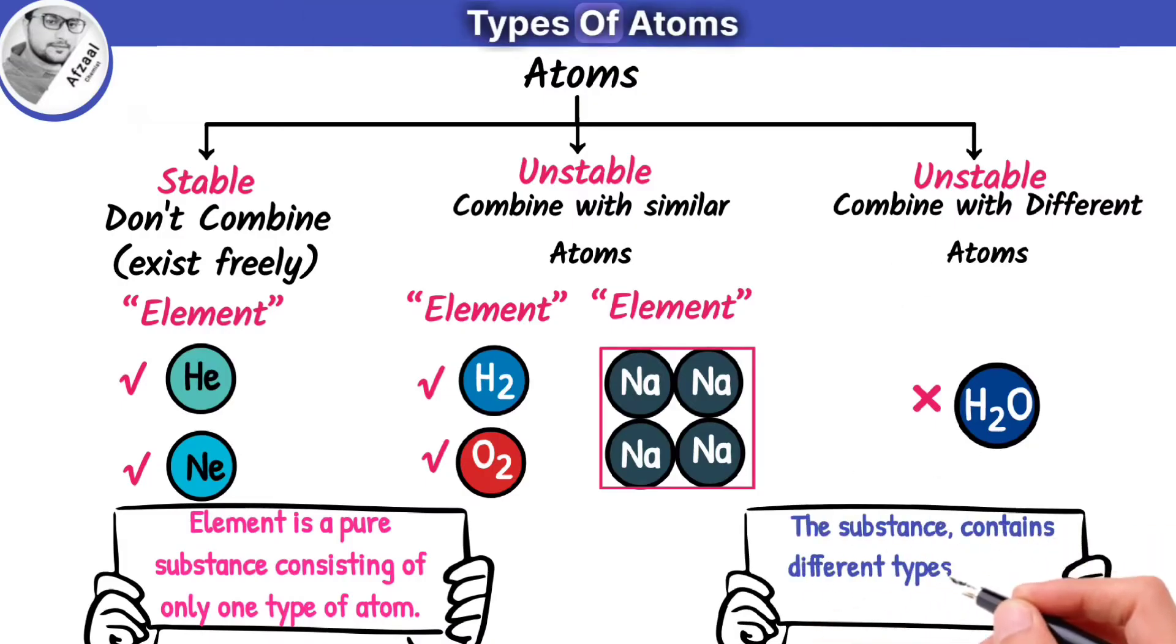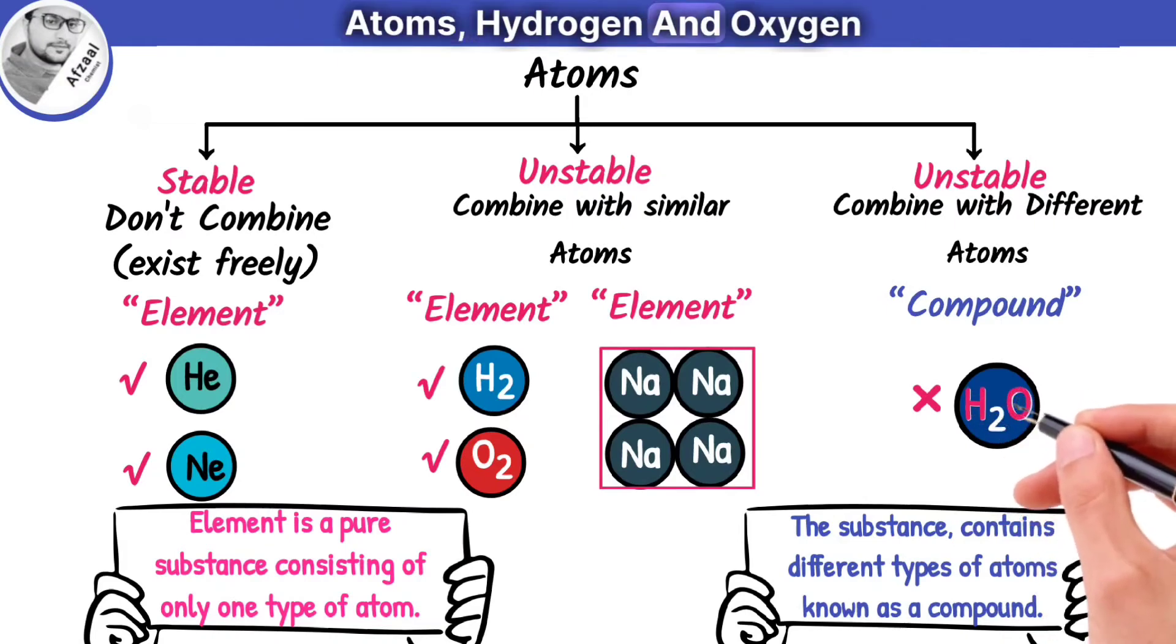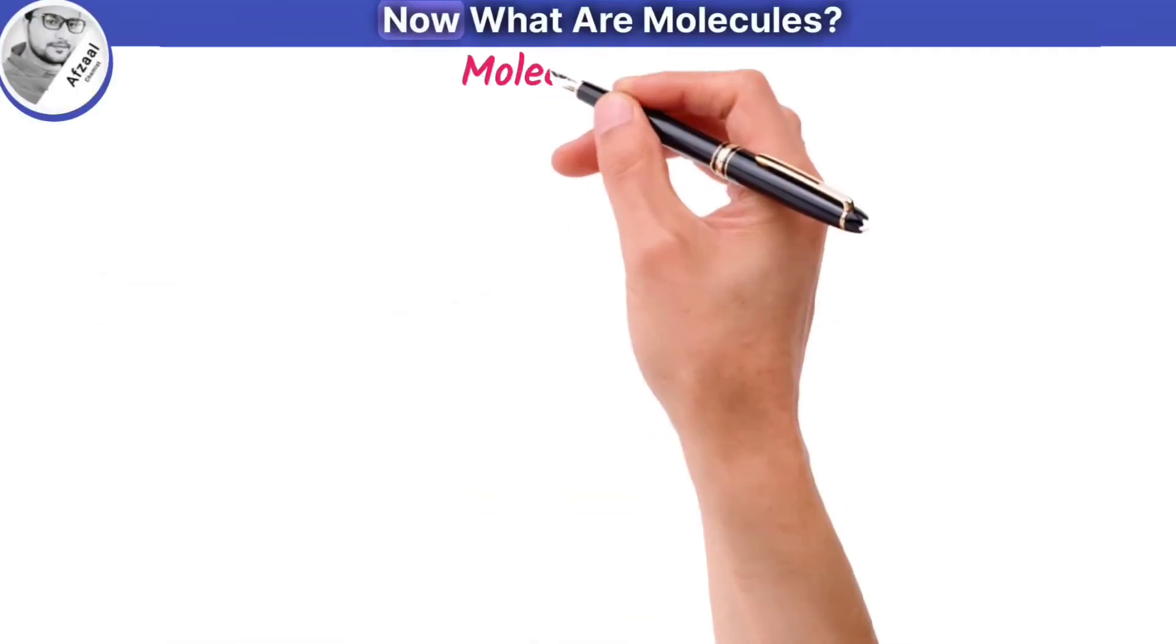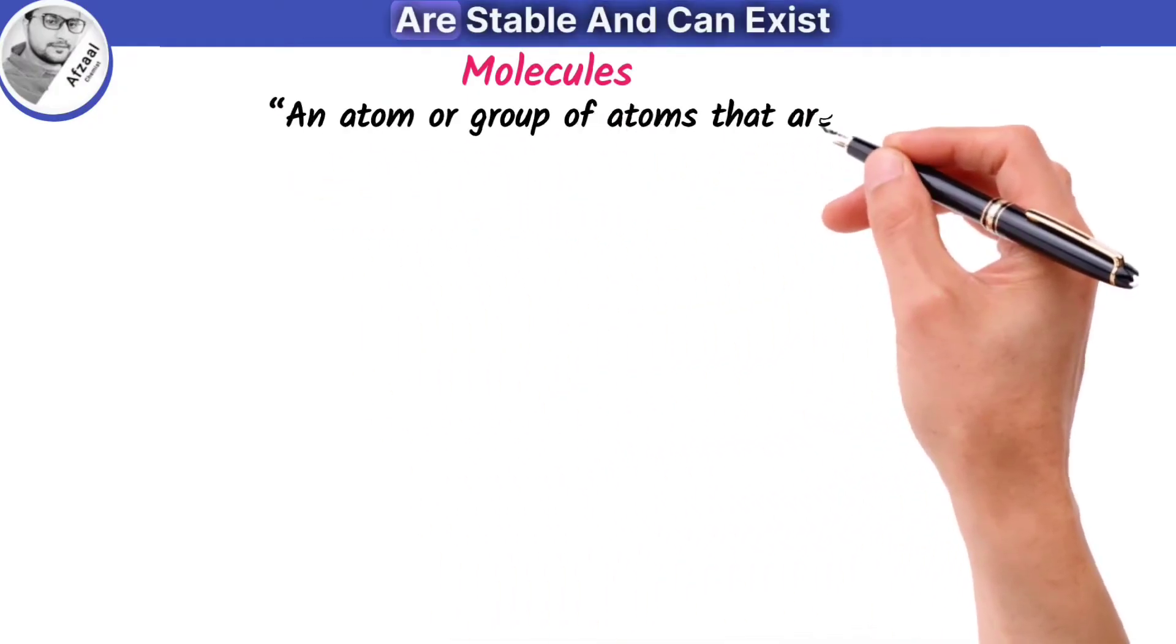Water is not an element, it's a compound because it consists of different types of atoms. The substance that contains different types of atoms is known as a compound. So water is known as a compound because water contains different atoms: hydrogen and oxygen. Now what are molecules? An atom or group of atoms that are stable and can exist independently are known as molecules.